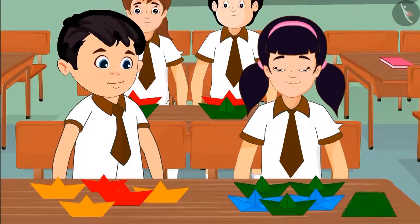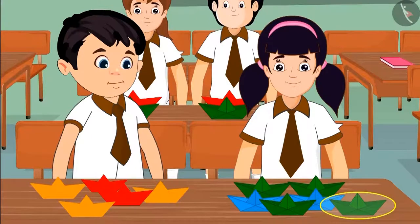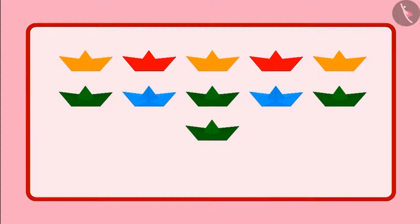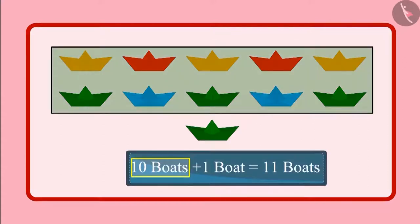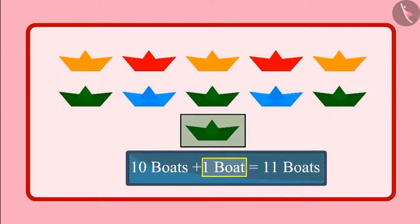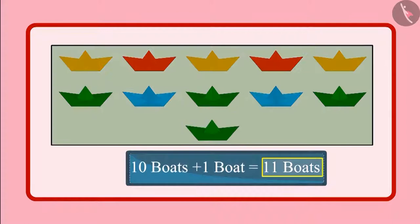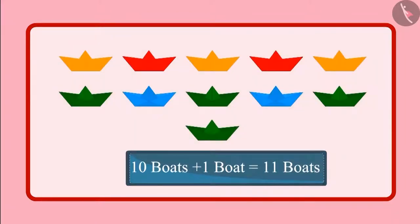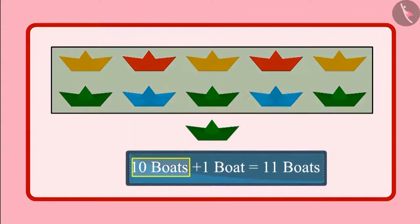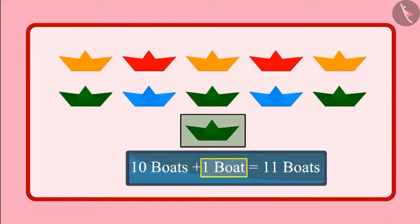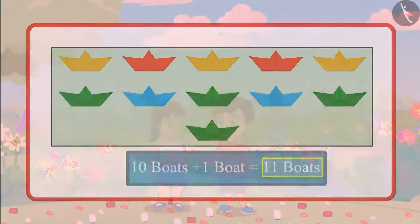Aarti had another paper left and she made another board with it. So children, can you tell me how many boards do Chotu and Aarti have now? Let us see. 10 boards along with another board. So there are a total of 11 boards. So children, did you see? When we have 10 boards and add another one, then we get a total of 11 boards.